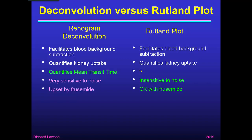Deconvolution can be upset by administration of a diuretic such as frusemide whereas the Rutland plot isn't — something I go into in more detail in my talk on diuresis renography. Deconvolution is also sensitive to timing errors whereas the Rutland plot is robust against timing errors. So comparing the two, the main benefit of deconvolution is to quantify mean transit time.